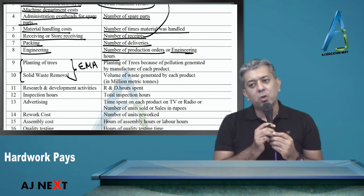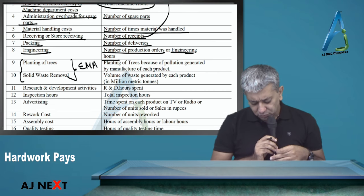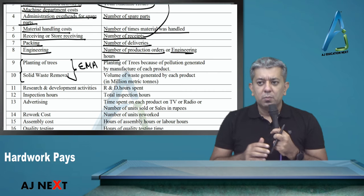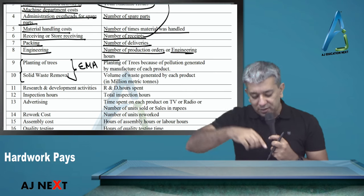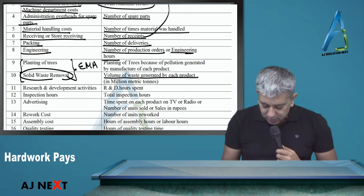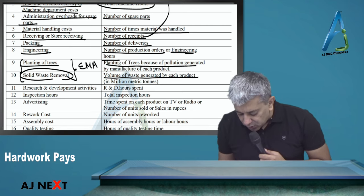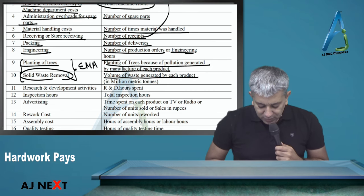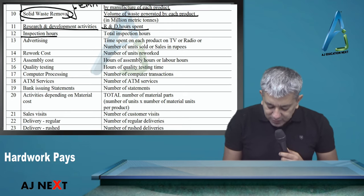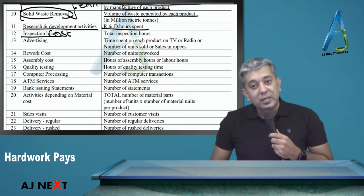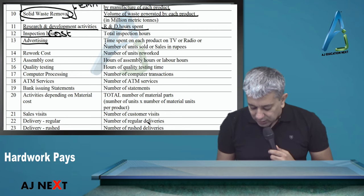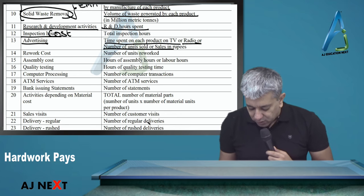Packing cost - number of deliveries. How many times will you pack? As many times as you have to deliver. Engineering cost, divide in the ratio of engineer hours or number of production orders. These items I've placed here are for EMA chapter - Environmental Management Accounting - where we try to break down the cost to include environmental costs. We manufacture a product, scrap is generated. We throw that scrap away. We include it in machine cost.